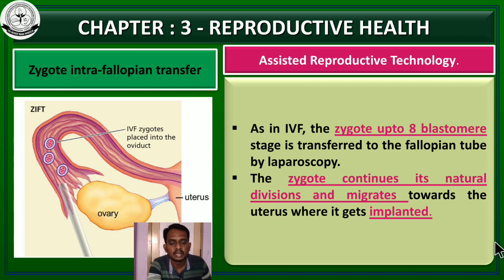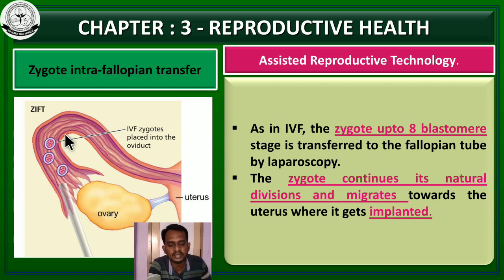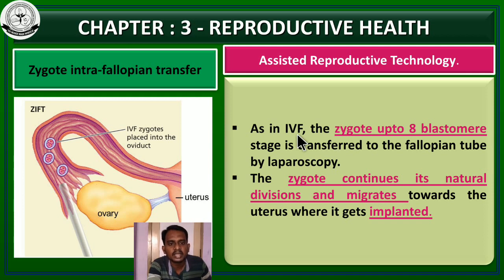Next, we move on to another technique — zygote intra-fallopian transfer (ZIFT). In the previous technique, GIFT, sperm and egg are artificially inoculated into the fallopian tube. But in zygote intra-fallopian transfer, what is transferred into the fallopian tube is the zygote. Fertilization is called in vitro fertilization. After completion of in vitro fertilization, the zygote, up to the 8-blastomere stage, is transferred into the fallopian tube by a laparoscopy technique.